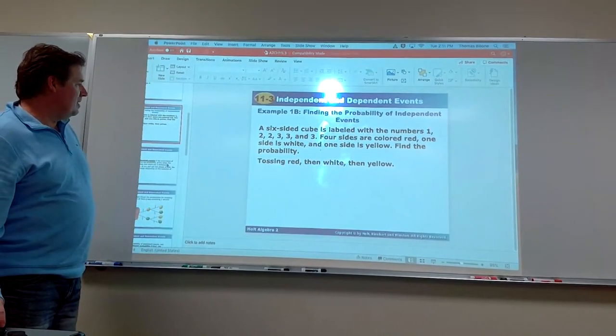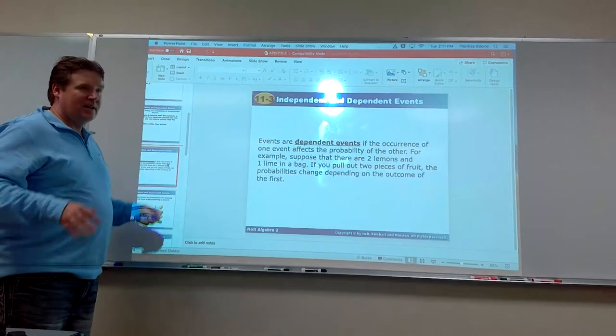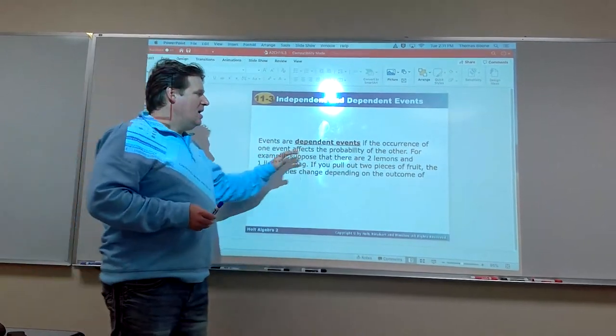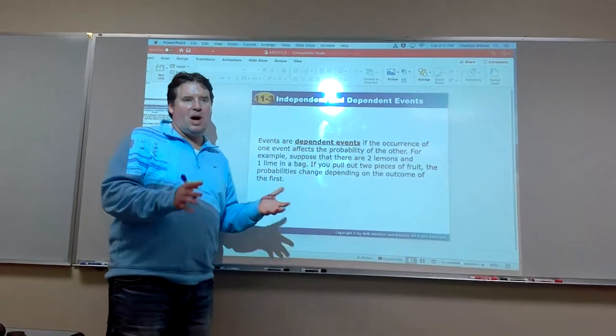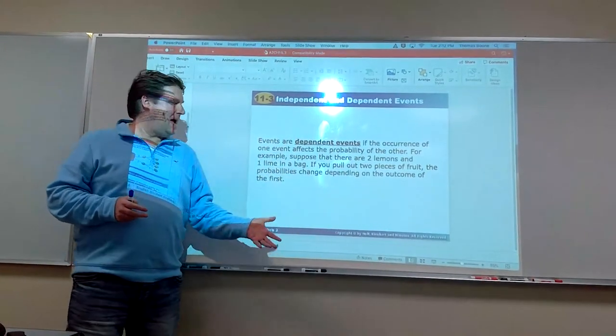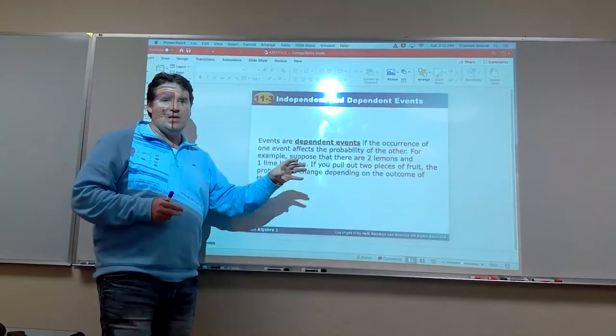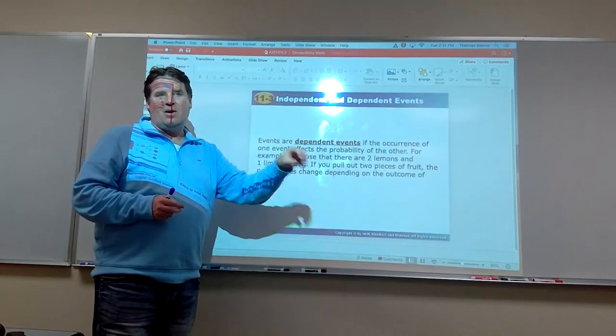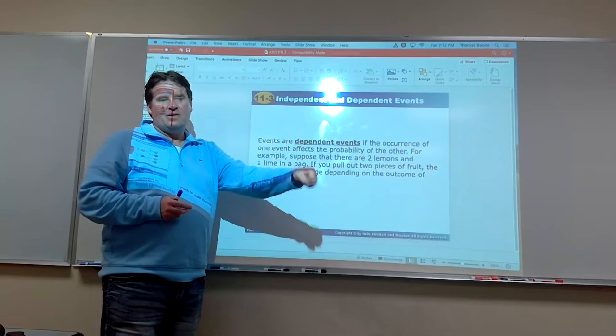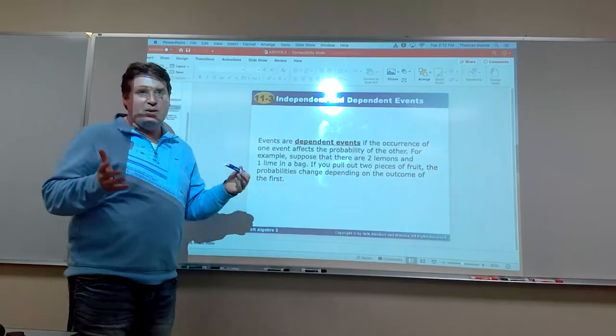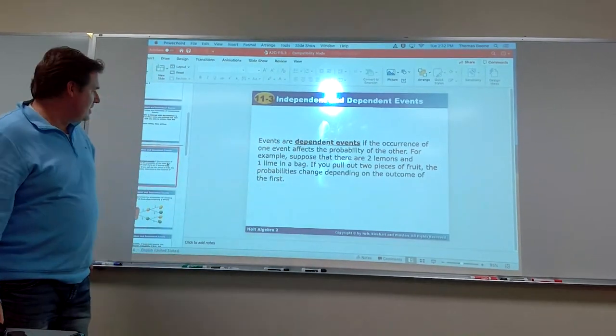Alright, so now we have independent events. Well obviously, logically, the next thing to talk about is dependent events. Now this occurs when an event that happens changes the probability of the next thing from happening. And most of the time what's going to happen is when you're drawing, when you're taking cards out of a deck or drawing out of a bag, it's when you're not putting it back. Because obviously that changes the probability, because you don't have as many things to draw from.